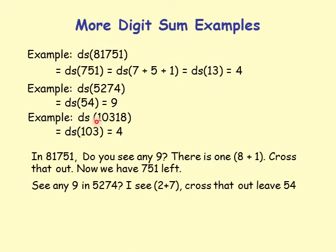Another example: digit sum of 10318. Any 9s? Yes — 1 plus 8 is 9, cross that out. I'm left with 1, 0, 3, which equals 4.